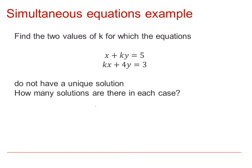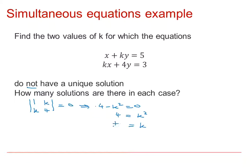In this example, we have to find the two values of K for which the two equations do not have a unique solution, and work out how many solutions there will be in each case. Looking at the coefficients of X and Y, we get the matrix (1, K, K, 4). For there to be no unique solution, the determinant must be zero. Working out the determinant gives 4 − K² = 0, so K² = 4, and therefore K = ±2.